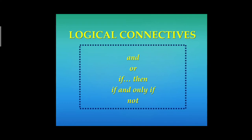The usual connective words we use to combine component statements to form a compound proposition are: and, or, if-then, if and only if, and not. For now, let's focus on identifying and rewriting the simple components in the given propositions. We will discuss separately how to determine truth values after we cover the different types of logical connectives, because the truth value changes depending on the connective used.